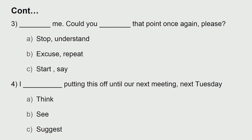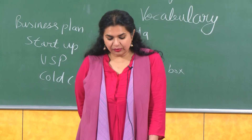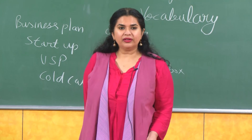Fourth: dash putting this off until our next meeting next Tuesday. The answer is: 'I suggest putting this off until our next meeting next Tuesday.' Number 5: I am sorry, but I did not quite dash your last point there — could you please repeat it? The options are catch, understand, or both — catch and understand. The answer is D — both catch and understand. You can say 'I could not catch your point' as an informal way, or 'I could not understand your point.' So: 'I am sorry, I could not understand your point — please could you repeat it.'